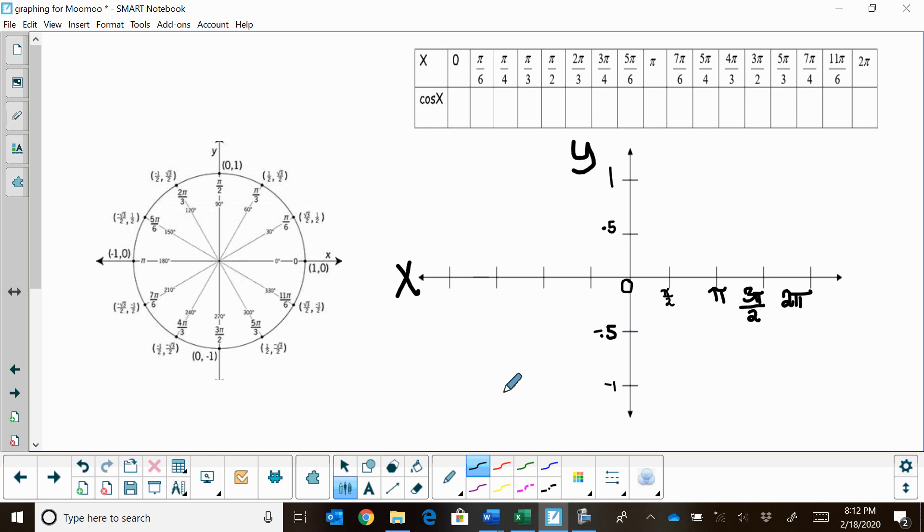The other thing you're going to need is the unit circle so we can read the values of cosine from it. Now, the values of cosine are always the x-coordinates, the first coordinate of the unit circle. You can watch the unit circle video to learn about y, but we're just going to use that to read off the values.